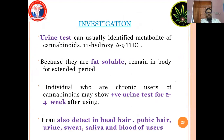Investigation. Urine tests can usually identify metabolites of cannabinoids — 11-hydroxy-delta-9-THC and THC-COOH. Because they are fat-soluble, they remain in the body for extended periods. Individuals who are chronic users of cannabinoids may test positive on urine tests for 2–4 weeks after last using. Cannabis can also be detected in head hair, pubic hair, urine, sweat, saliva, and breath.